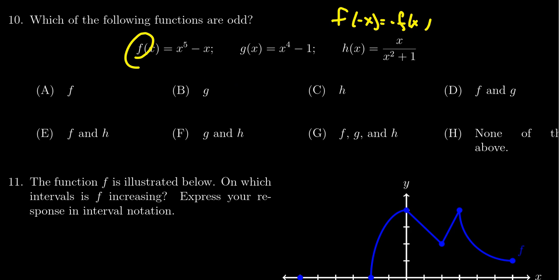Choice g is also a polynomial but now we have even powers x to the fourth minus one, which you can think of as x to the zero, zero is an even number. We know it's not going to be odd because there aren't only odd powers, but this actually is an example of an even function. We're not looking for that but it is in fact an even function.